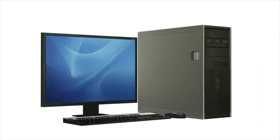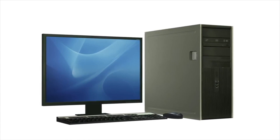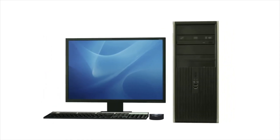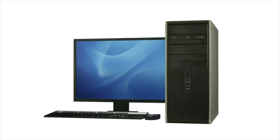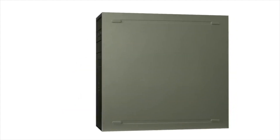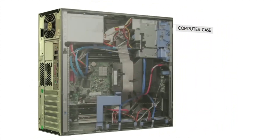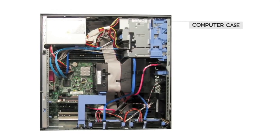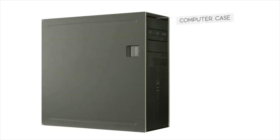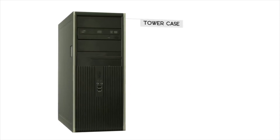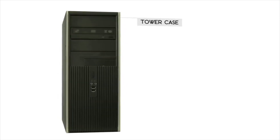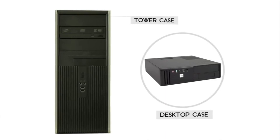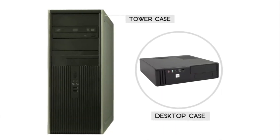A desktop computer is made up of several basic parts, and we're going to show you what these parts are and what they're used for. The computer case contains the main components of the computer — this is where the actual processing happens. Today, most cases are tower cases, which means they stand up vertically. Sometimes you see a horizontal case, which is often called a desktop case.